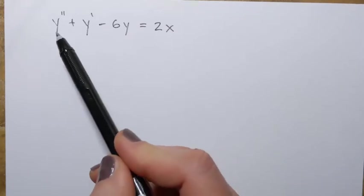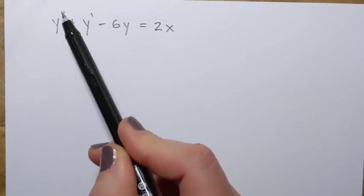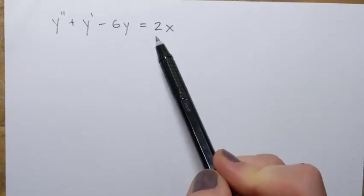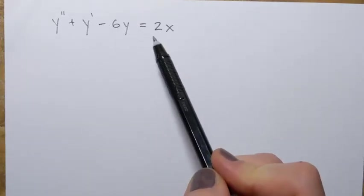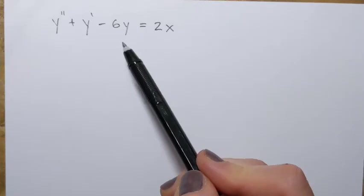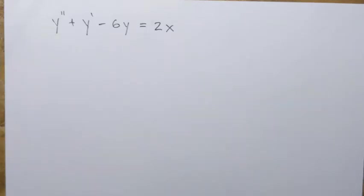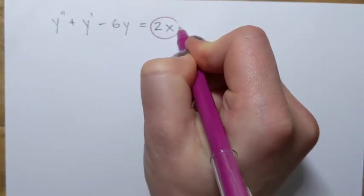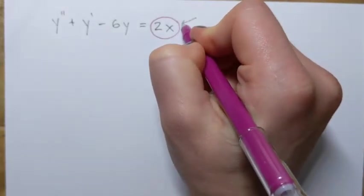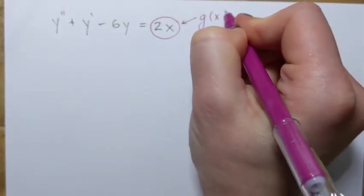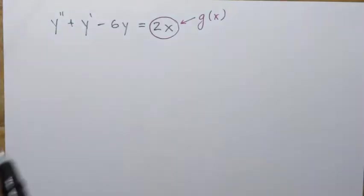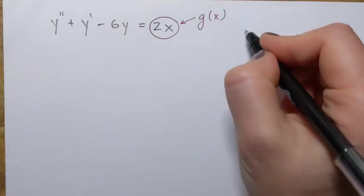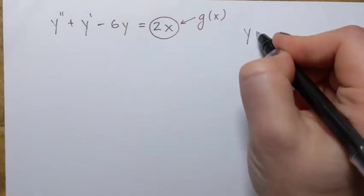We're going to solve the following equation: y double prime plus y prime minus 6y equals 2x. This is a non-homogeneous linear differential equation — it's non-homogeneous because the right-hand side is a function of x, which we call g of x.